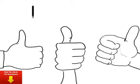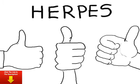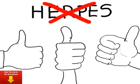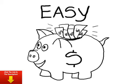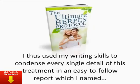The step-by-step herpes protocol my father developed worked not only for these people, but for literally everyone who tried it. Up to today, it has helped more than 7,500 herpes victims ban the virus from their lives, never to suffer from any sore again. Best of all, it's so simple and inexpensive. Just a few months ago, it was almost impossible to get access to this treatment protocol. I just used my writing skills to condense every single detail of this treatment in an easy-to-follow report, which I named the Ultimate Herpes Protocol, Secrets to Naturally Treat Herpes.